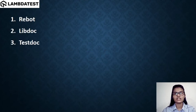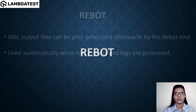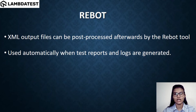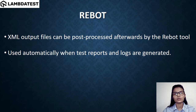Now let's move on to built-in tools. We have three built-in tools: Rebot, Libdoc, and Testdoc. The Rebot tool is one of the most powerful built-in functions in Robot Framework. It helps you to post-process your XML output files afterwards. So with the Rebot tool, your XML output files can be post-processed after the test run.